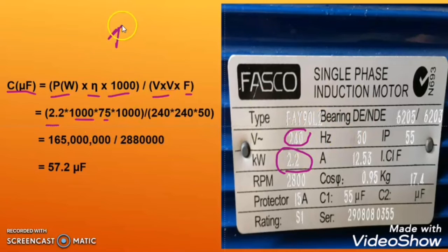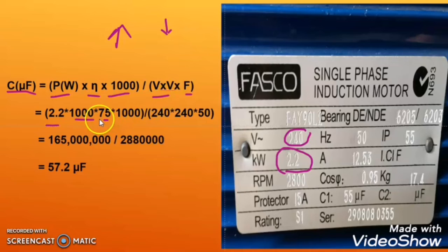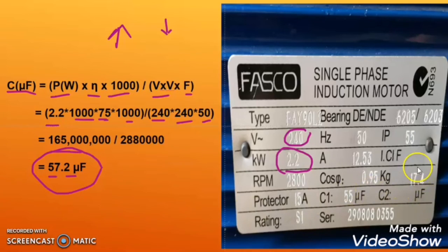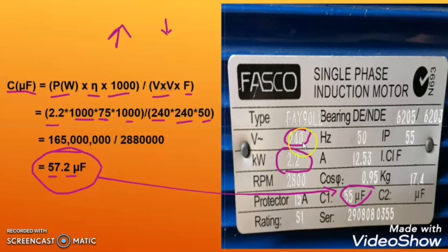Here the efficiency is not given. For a bigger motor, I consider a lower efficiency since the winding is more and the losses will be more, so I take efficiency as 75%. Voltage is 240, frequency is 50 Hz. When we calculate, we get 57.2 microfarad. The nameplate also shows 55 microfarad, so in the market we can use a 55 microfarad capacitor for this induction motor.